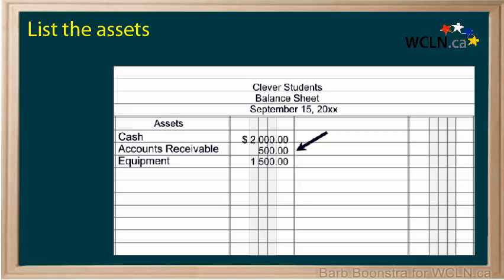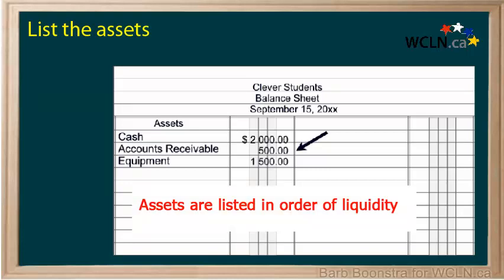Put in the title assets — notice that this is centered above the column — and then list the assets of the company. Notice that no abbreviations are used. Assets are listed in order of liquidity, that is, the order in which they can be converted to cash. Cash of course is the most liquid, then accounts receivable, and then equipment.